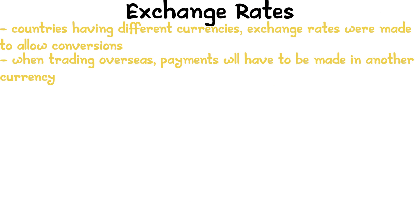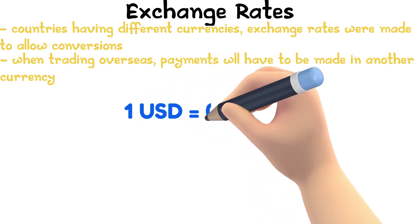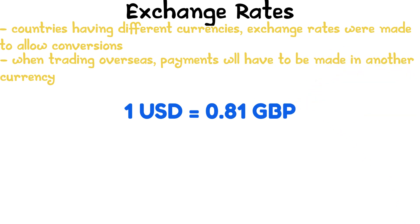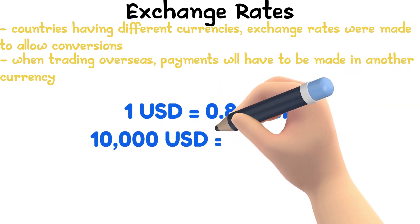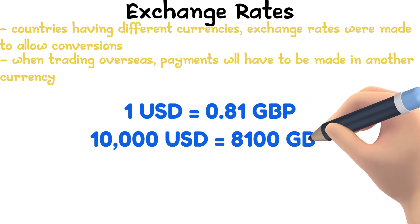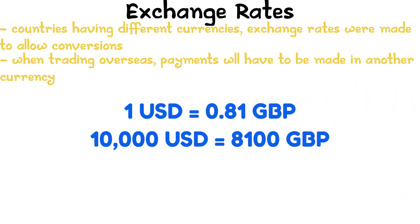Transactions between people in different countries are difficult due to the use of different currencies. The exchange rate for US dollars and sterling pounds is: one US dollar equals 0.81 sterling pounds. So a purchase of $10,000 US dollars would be equal to a total sterling pound value of 10,000 multiplied by 0.81, which is £8,100.